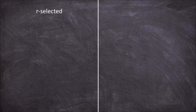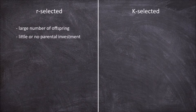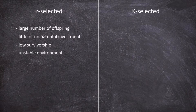There are several traits that help determine whether a species is an R selected or K selected species. R selected species adopt the strategy of producing large amounts of offspring whilst providing little or no parental care or investment to these offspring. In this strategy each individual offspring has less chance of surviving into adulthood, but a few survive. They are often living in unstable environments and are usually small in size.